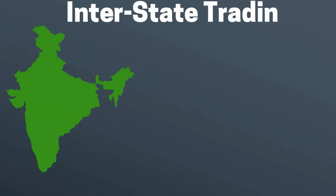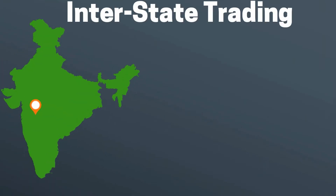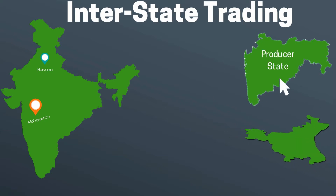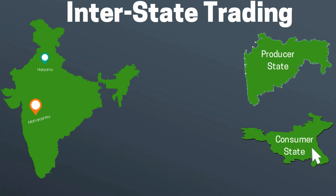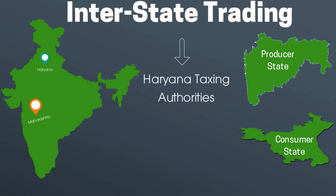In example number two, we'll discuss interstate trading. If a manufacturer based in Maharashtra enters into a contract to sell his goods to a person in Haryana, here Maharashtra will be the producer state and Haryana will be the consumer state. As the final place of consumption is based in Haryana, the Haryana taxing authorities will collect the taxes.